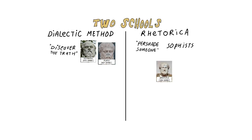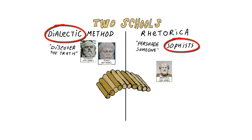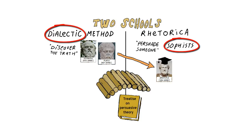In the art of rhetoric, Aristotle somewhat bridged the gap between the sophist and dialectic method. As a student of Plato, he is well versed in the use of the dialectic method and rational argumentation. But he did not share Plato's dislike of rhetoric, and he wrote an extensive treatise on persuasive theory, in which rational arguments definitely play an important, but not an exclusive part.